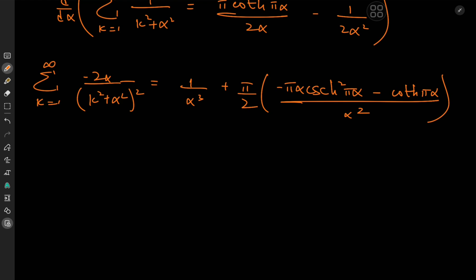Expanding by negative 1 over 2 * alpha, we get the sum over k from 1 to infinity of 1 over (k squared plus alpha squared). Notice that we invoked Feynman's trick of differentiating under the integral sign, and here we differentiated an infinite series as well. So this was a pretty cool all-round calculus video — we had a little bit of everything regarding functions in the integrand, and now we have integrals, derivatives, and infinite series expansions.